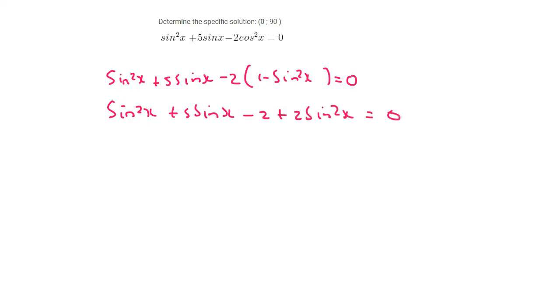Now we have a trinomial looking expression, but let's just put these two together. So that's going to be 3 sin squared x like that.